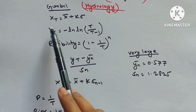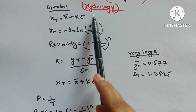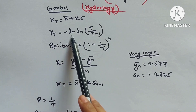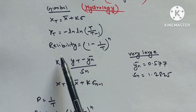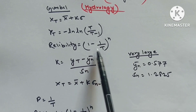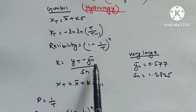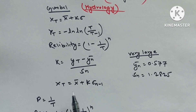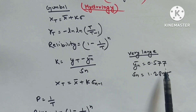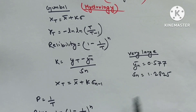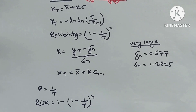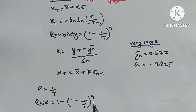Gumbel's formula: Xt = X̄ + Kσ. Yt = −ln(ln(T/(T−1))). Reliability = (1 − 1/T)^n. K = (Yt − Ȳn)/Sn. Xt = X̄ + Kσ_{n−1}. For very large data: Ȳn = 0.577, Sn = 1.2825. Pt = 1/T. Risk = 1 − (1 − 1/T)^n.